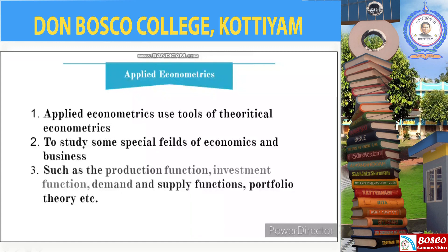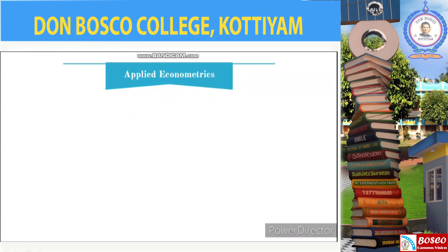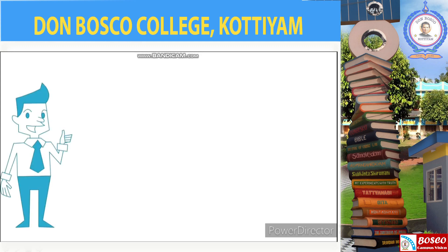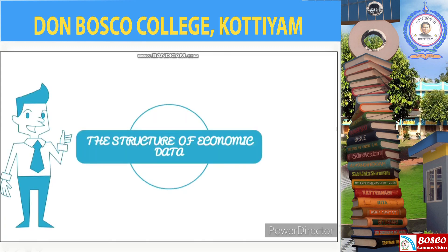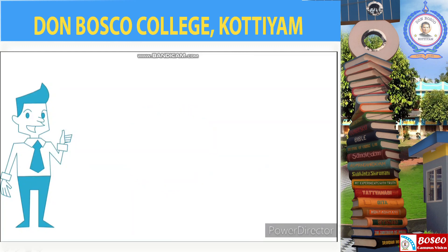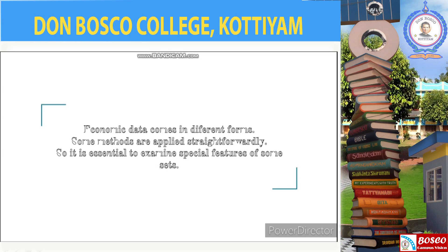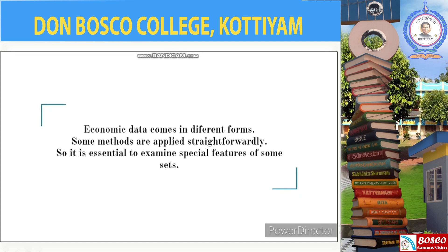Now we will move on to the structure of economic data. Economic data sets come in various forms. While some econometric methods can be applied straightforwardly to different types of data sets, it is essential to examine the special features of some sets. We will describe the most important data structures encountered in applied econometrics. We begin with the first one: cross-sectional data.